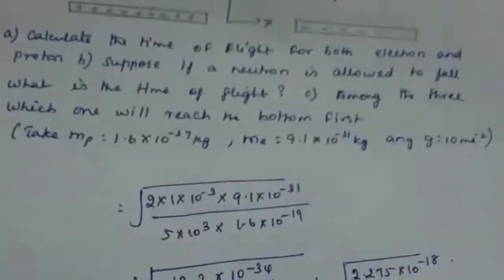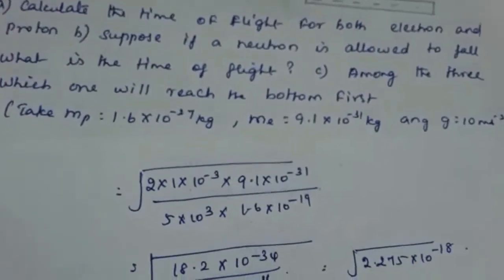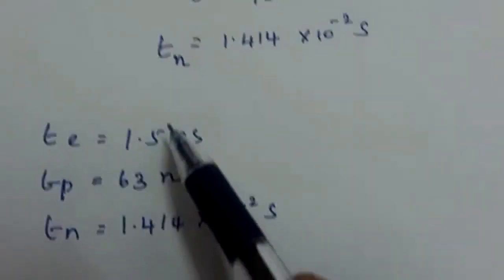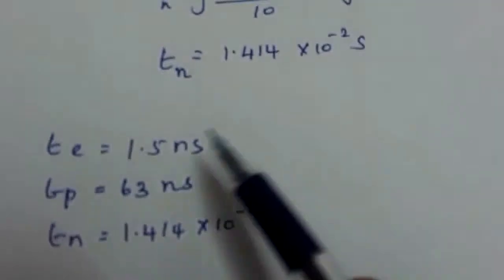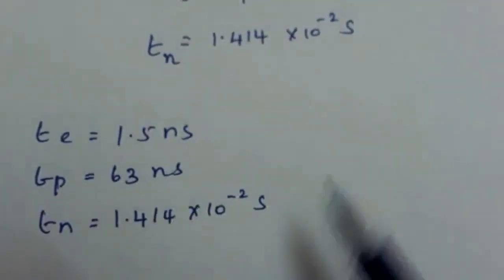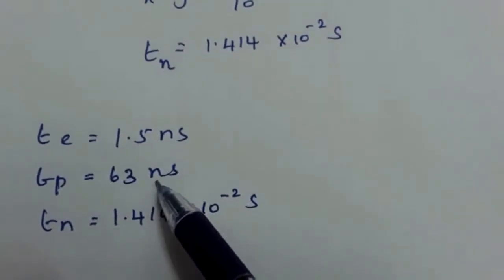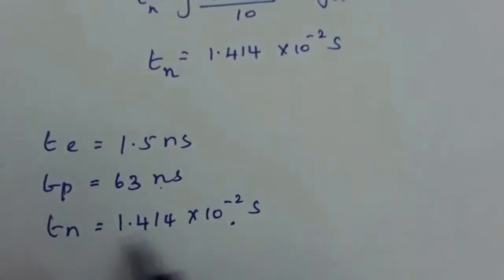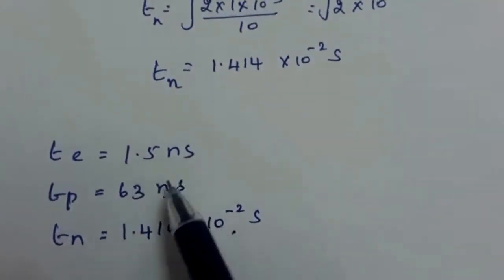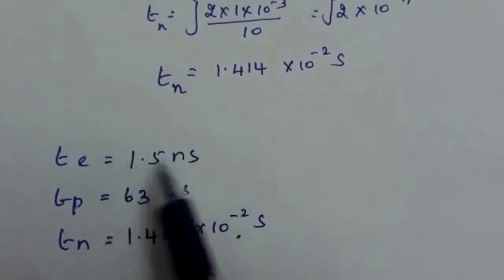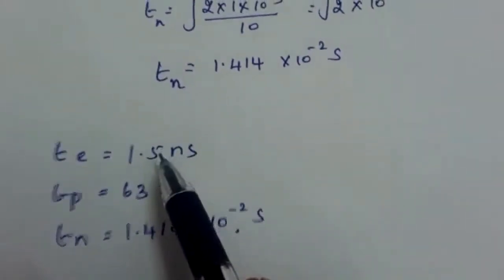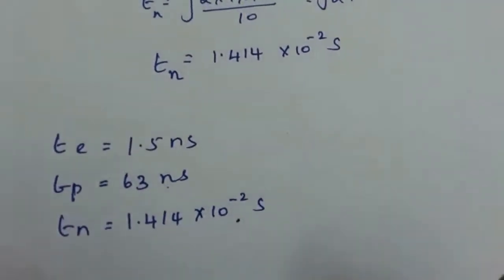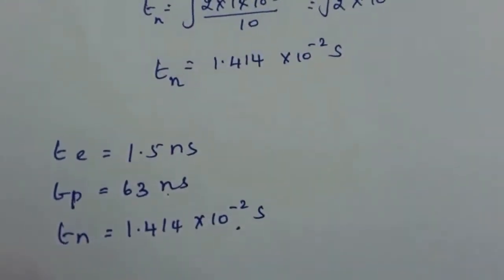For the third part: among the three, which one reaches the bottom first? The one with the smallest time value reaches first. Comparing: t_e (1.5 ns) and t_p (63 ns) are both in nanoseconds, while t_n (10⁻² s) is the largest. Between electron and proton, the electron has the lowest value, so the electron reaches the bottom first.